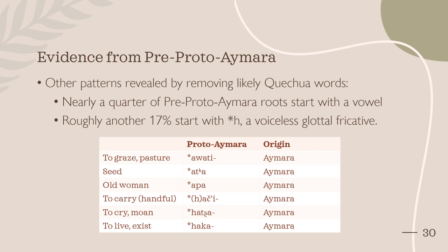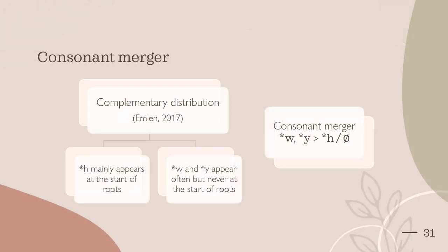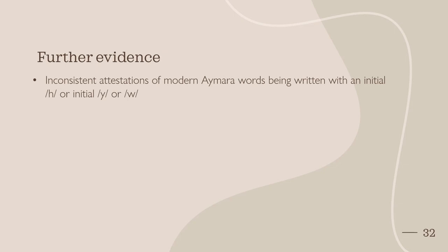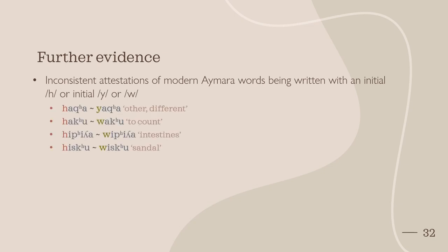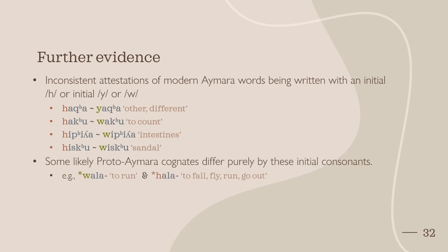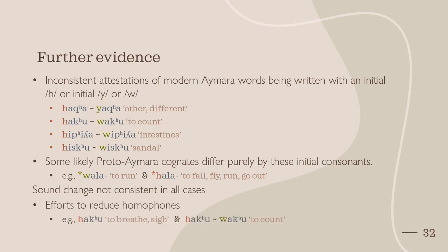Other patterns revealed by removing words that likely originate from Quechua include nearly a quarter of pre-proto-Aymara roots starting with a vowel and roughly another 17% starting with H, a voiceless glottal fricative. Emelin points out a complementary distribution of these consonants, where H mainly appears at the start of roots, while W and Y appear often but never at the start of roots. Based on these observations, there appears to have been a consonant merger at some point in pre-proto-Aymara. Further evidence includes inconsistent attestations of some modern Aymara words showing variations between being written with an initial H or initial Y or W. Some proto-Aymara words that are likely cognates differ purely based on these initial consonants, and this sound change is not consistent in all cases, likely due to efforts to reduce homophones, such as with haku and waku.